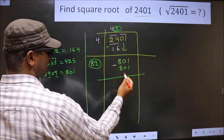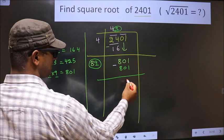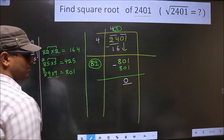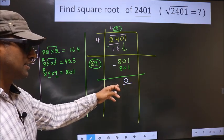Now you subtract. 801 minus 801 is 0. So we got 0 here.